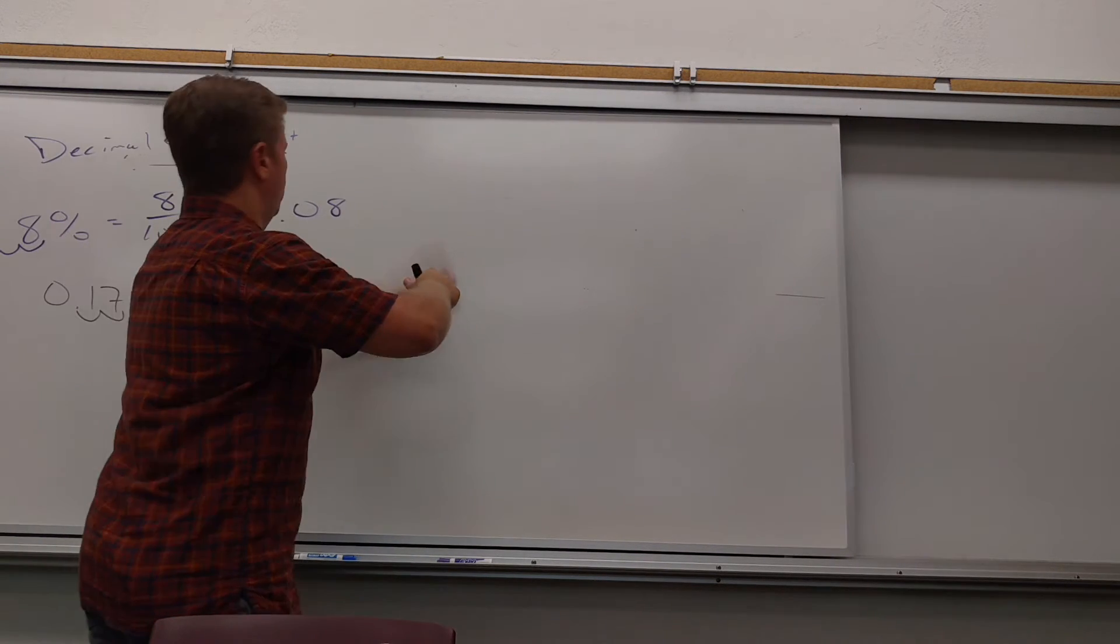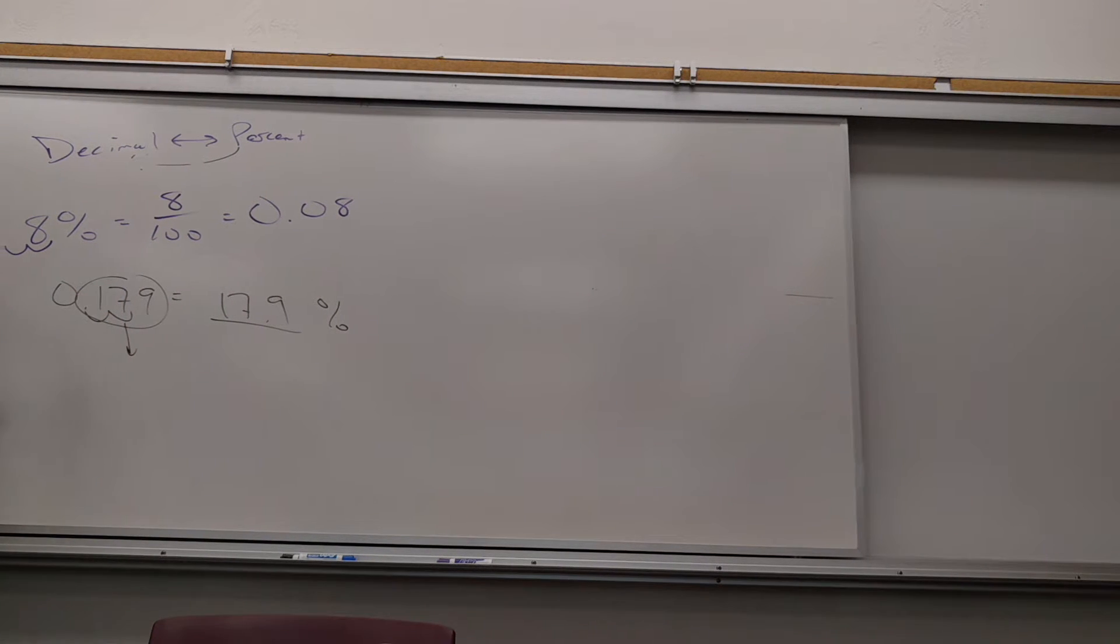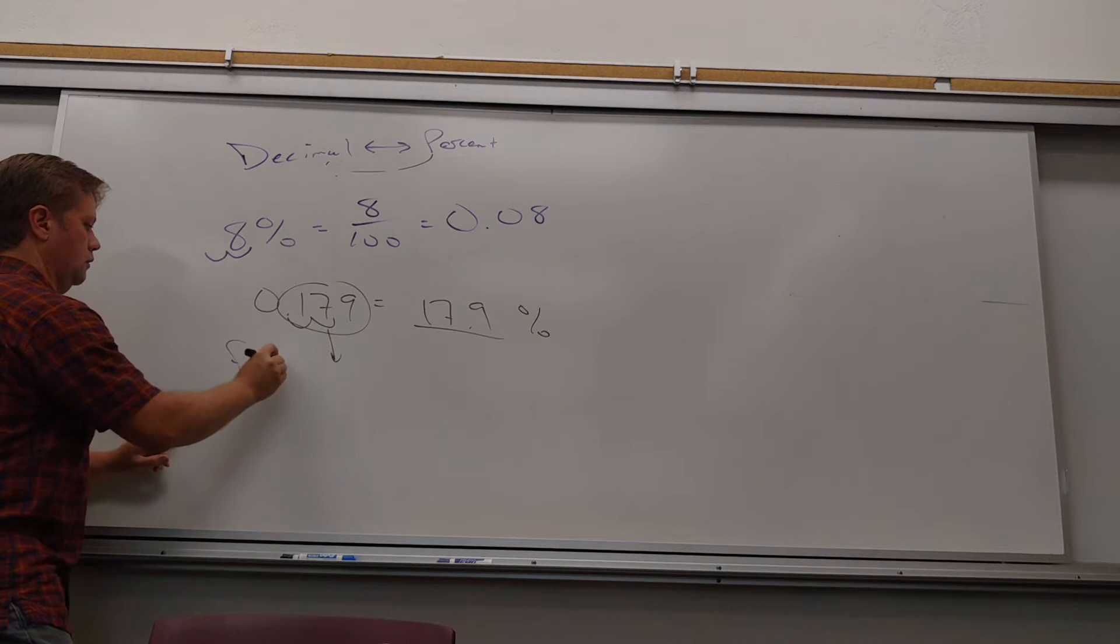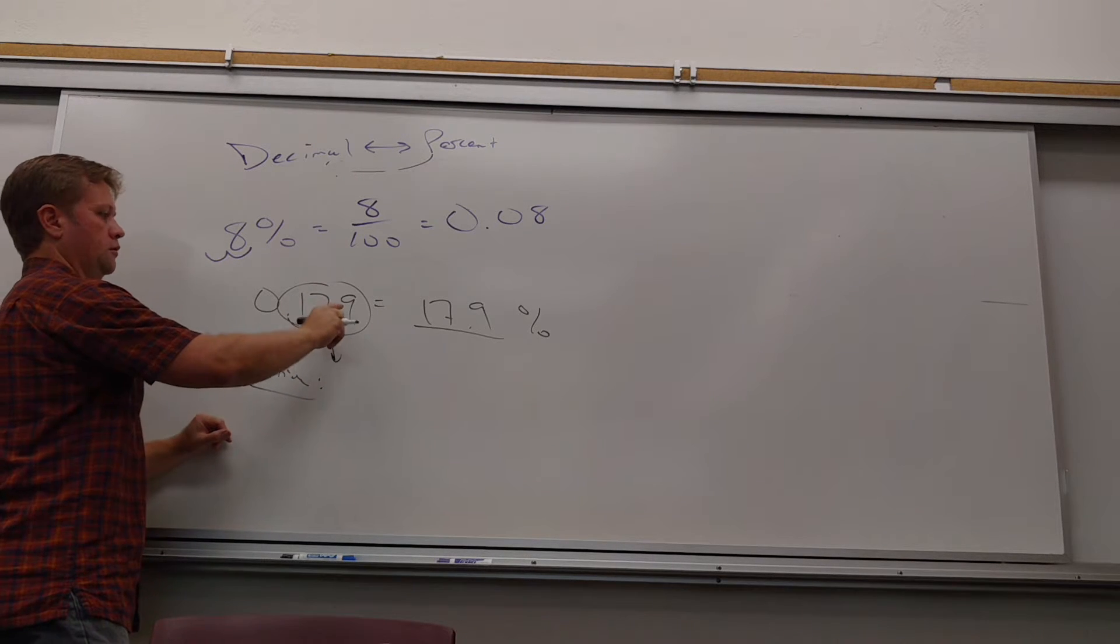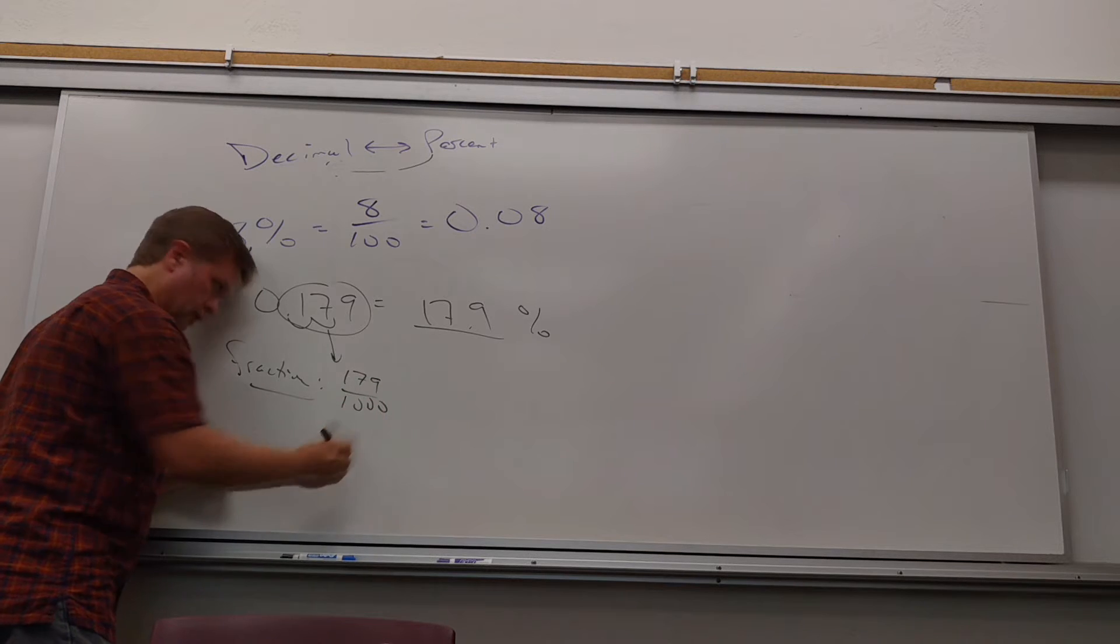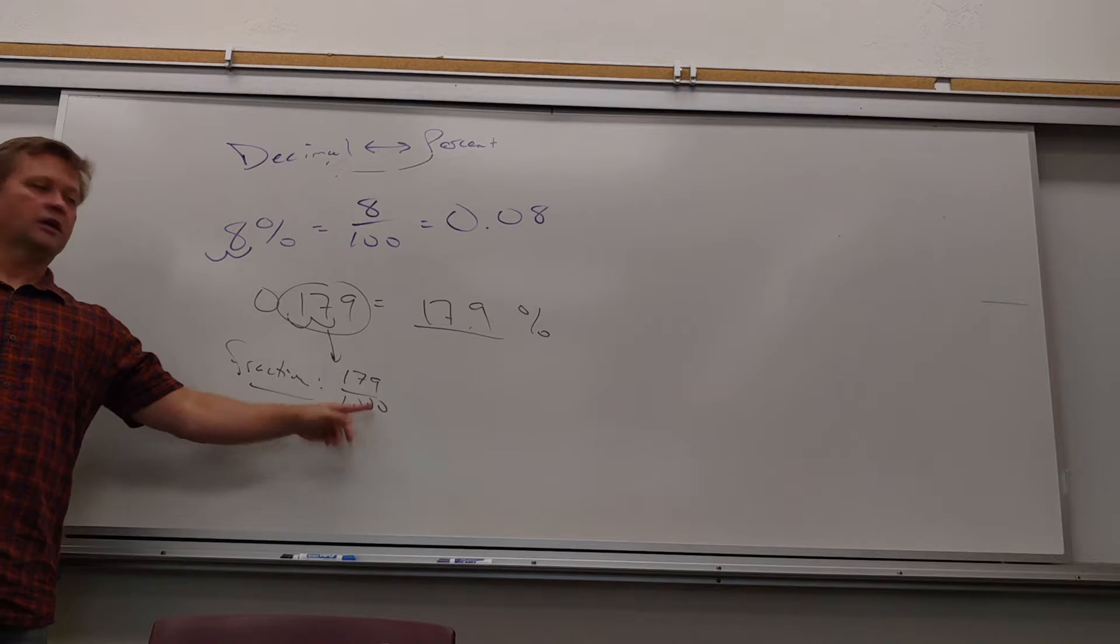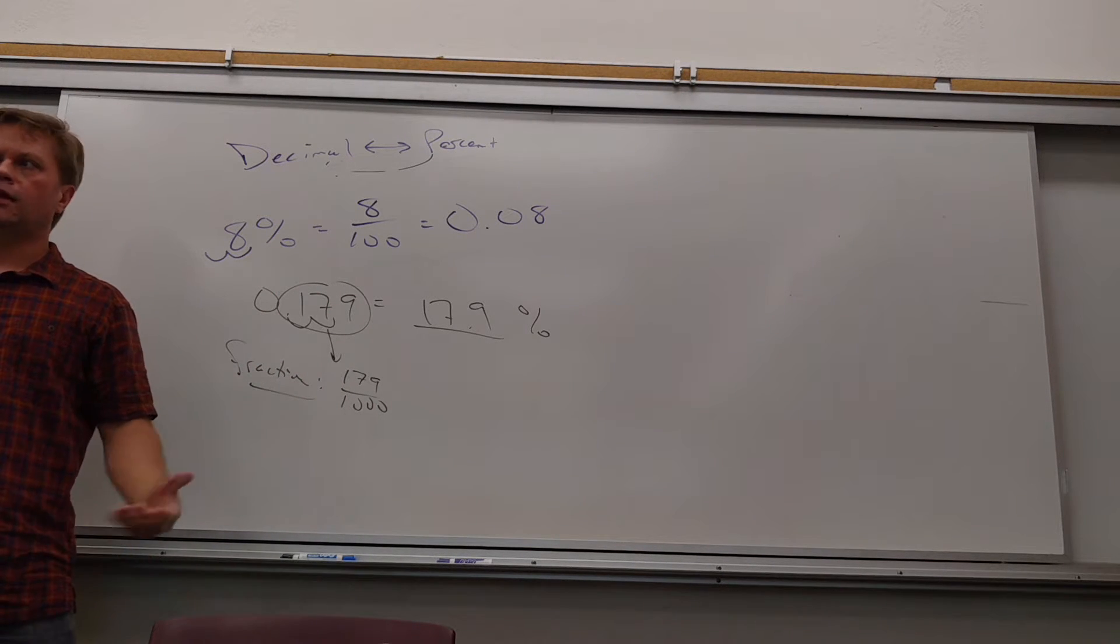And fractions of course are easy for all of these. What is this as a fraction? I'm saying it's easy, but let me make sure. What is that as a fraction? What place is it in? Thousandths. So it's one seventy-nine over? A thousand. How many zeros did I put? How many places out is it? Holy shoot. All right, so let that be simple.